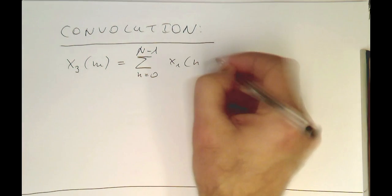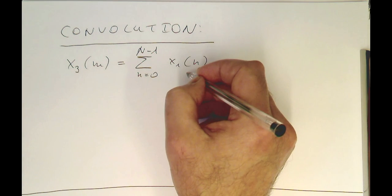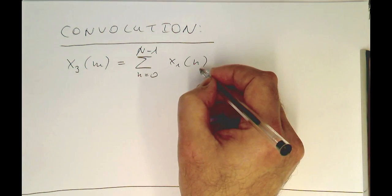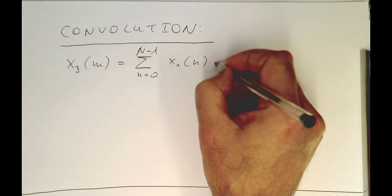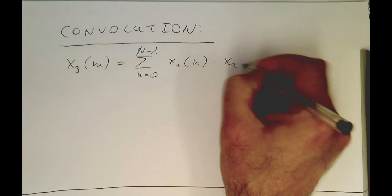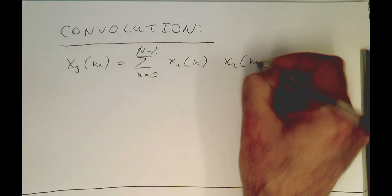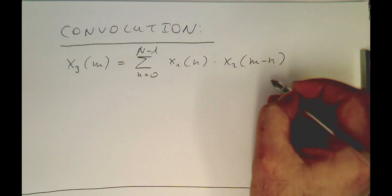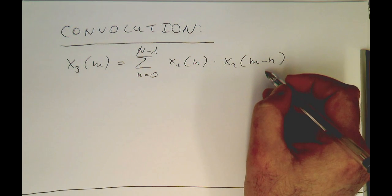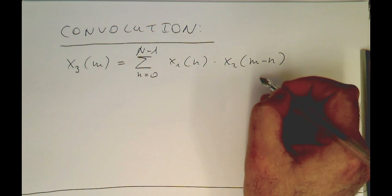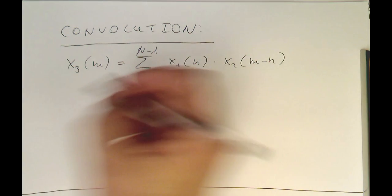And then we've got here, for example, the variable x1. This is running with the index n in positive time. And we multiply this with a variable x2, where we have m minus n, which is running in negative sample time. What's the story here?